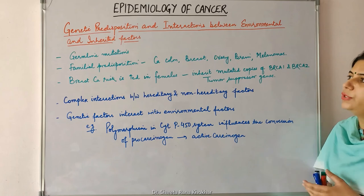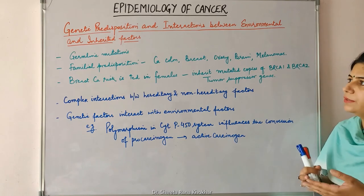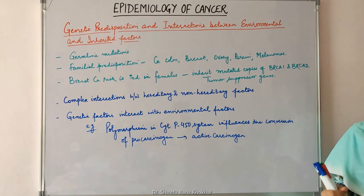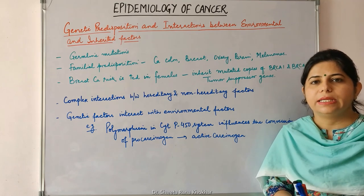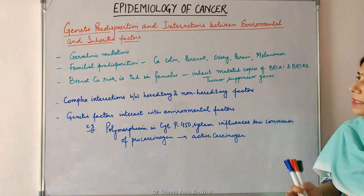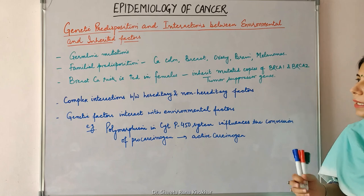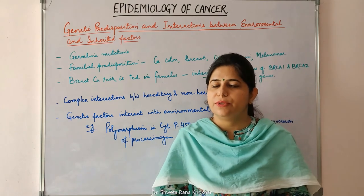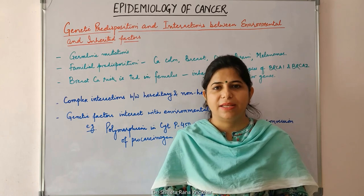In this video, we discussed the epidemiology of cancer, including various factors such as age, environmental factors, acquired predisposing conditions — which include chronic inflammatory disorders, precursor lesions, immunodeficiency states — and genetic predisposition and interaction between environmental and inherited factors. I hope you liked the video. Please subscribe to my channel and do not forget to like and share. Thanks for watching.